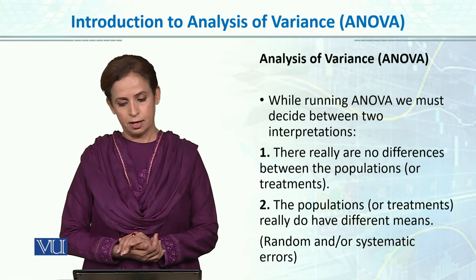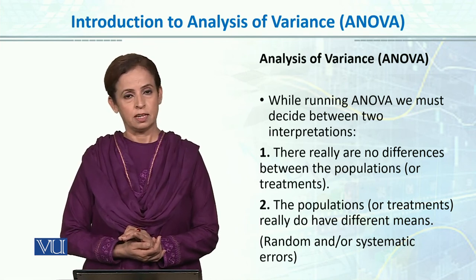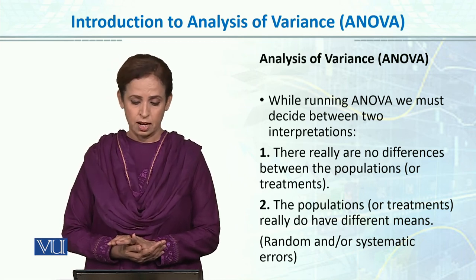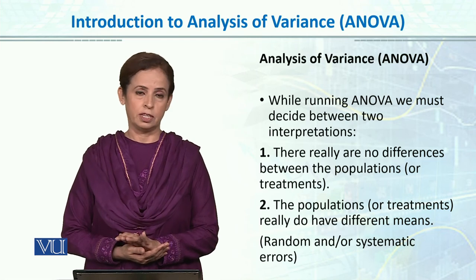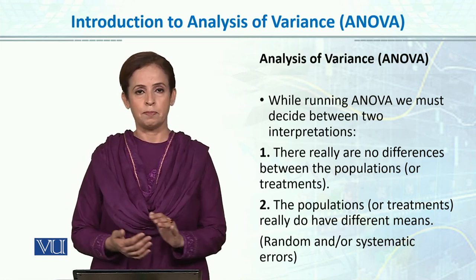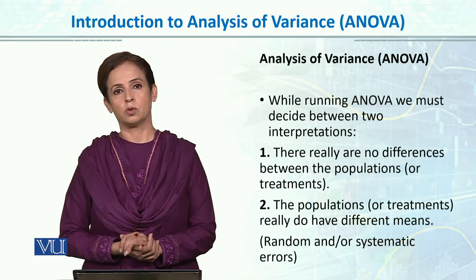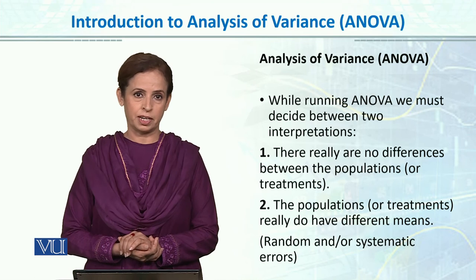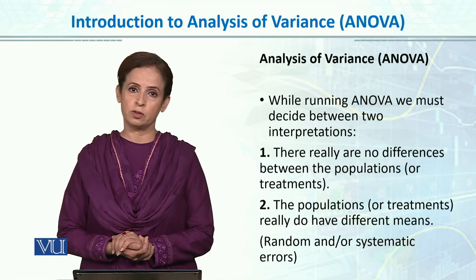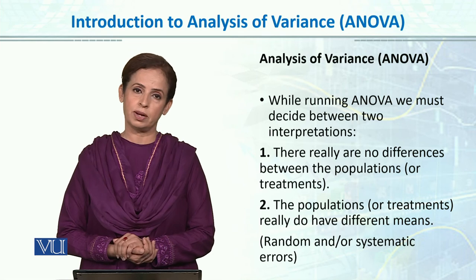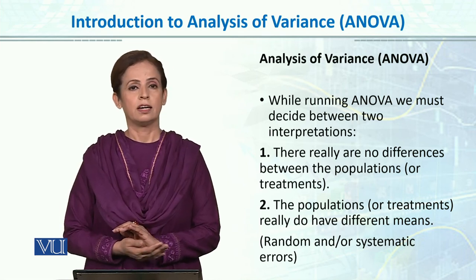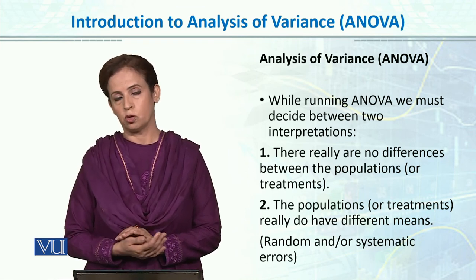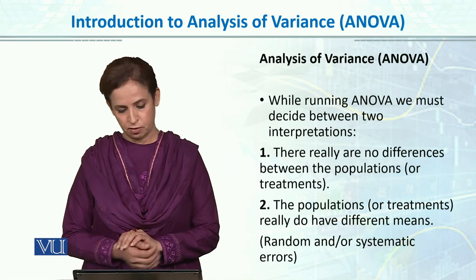While running ANOVA, we must decide between two interpretations: whether differences between the populations exist or do not exist. When you compare three or four groups using ANOVA, you interpret whether the differences exist because of the treatment, or whether they exist due to other factors, random error, or within-group variables.